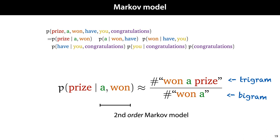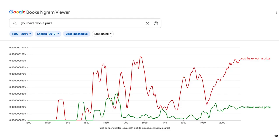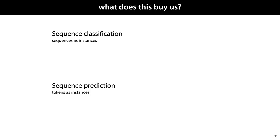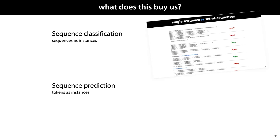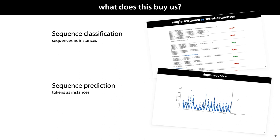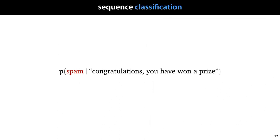So now that we have a way of probabilistically modeling sequences, what can we do? We'll use this to tackle both the case where our data consists of a separate sequence per instance, like in our spam classification example, and the case where our data consists of a single sequence and we're trying to predict the next token. First up: sequence classification. In that setting, the probability we're interested in modeling is the probability that our instance is spam, given that its content is 'congratulations, you have won a prize.' We'll build a simple generative classifier. The first thing we do is use Bayes' rule to reverse the conditional.